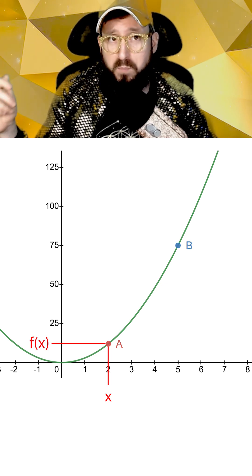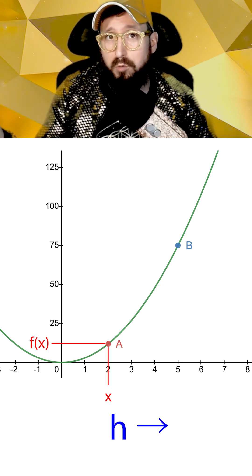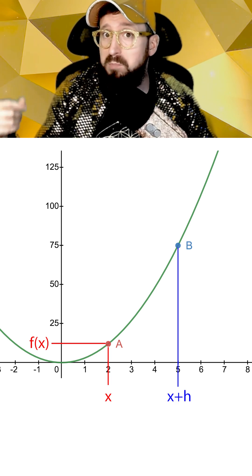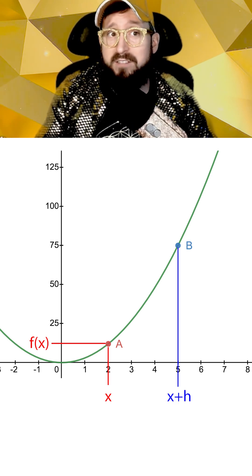We could consider another point b located a distance h to the right so that its x-coordinate is now x plus h, and its y-value is f of x plus h.